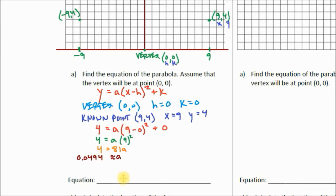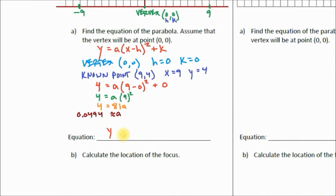0.0494 is our A value. And now we can write our equation. Y equals 0.0494. And class, we don't have to write the h value because it's 0. So that's just going to be x squared. And we don't have to write the k value because that is 0. So there's our equation.